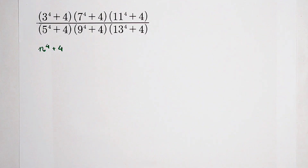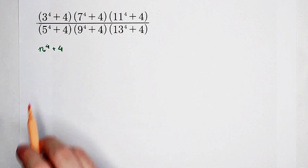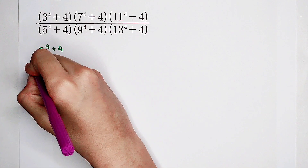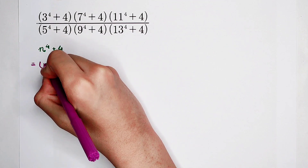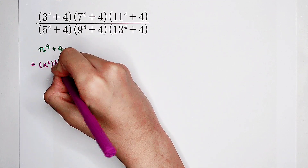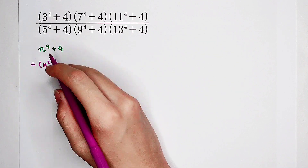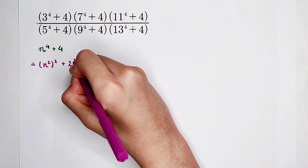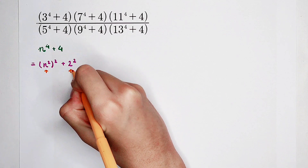Take a look at the exponent: 4. And the constant is also 4. So we should write n to the power 4 as n squared times n squared. We should write this n to the power 4 as n squared and n squared. And then plus 4 — this 4 can also be written as a square: 2 squared. So now we have n squared and 2 squared — they are both squared terms.